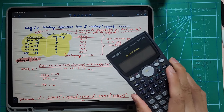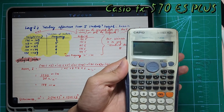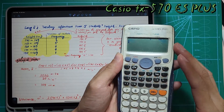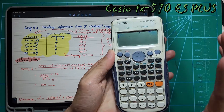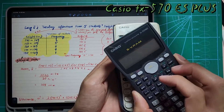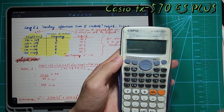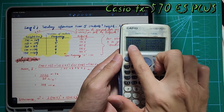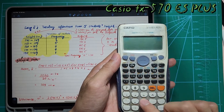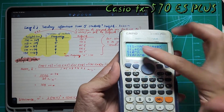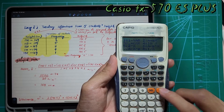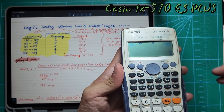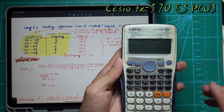Now we're done with the fx-570MS. My favorite calculator is the fx-570ES Plus — this is totally different from what we just did. It's slightly more chunky. Press Mode once, press number 3 to enter statistics. Don't press any figures here — press AC to go out, and you'll see 'STAT' on screen, which stands for statistics.